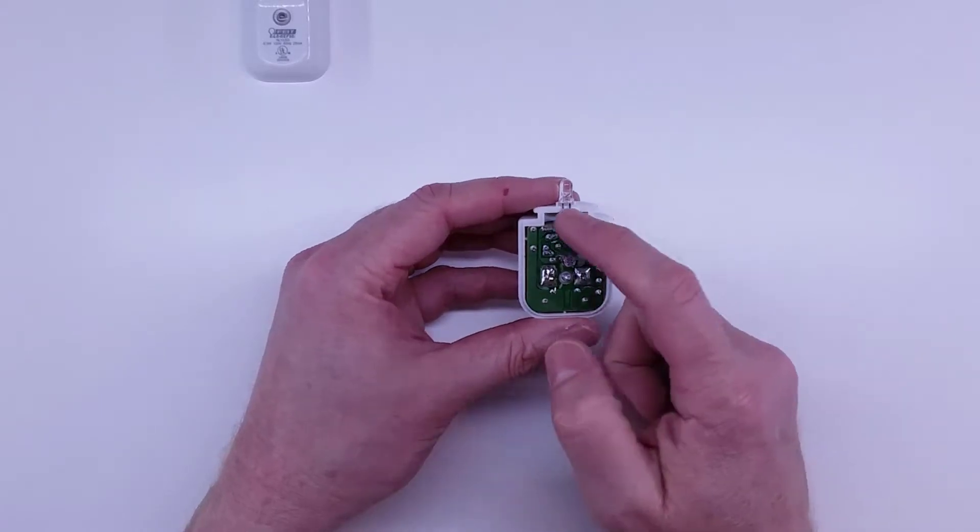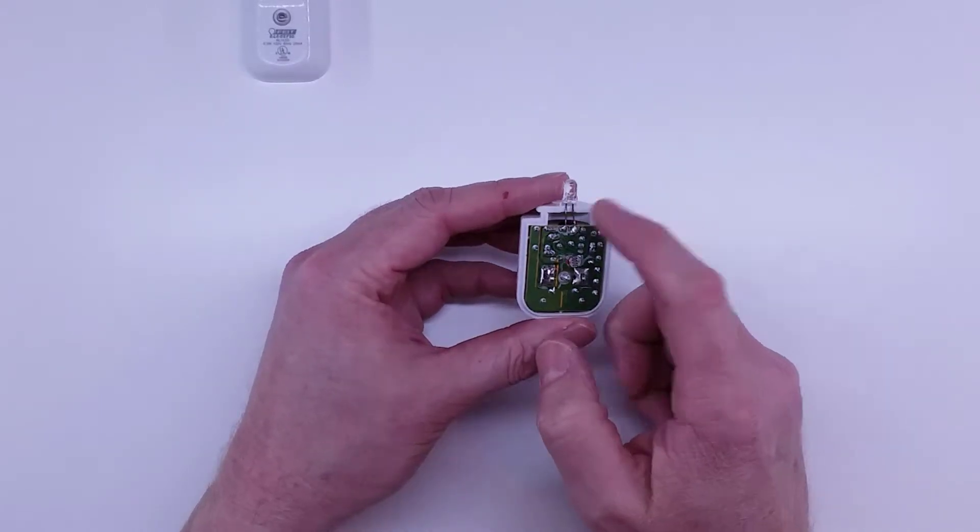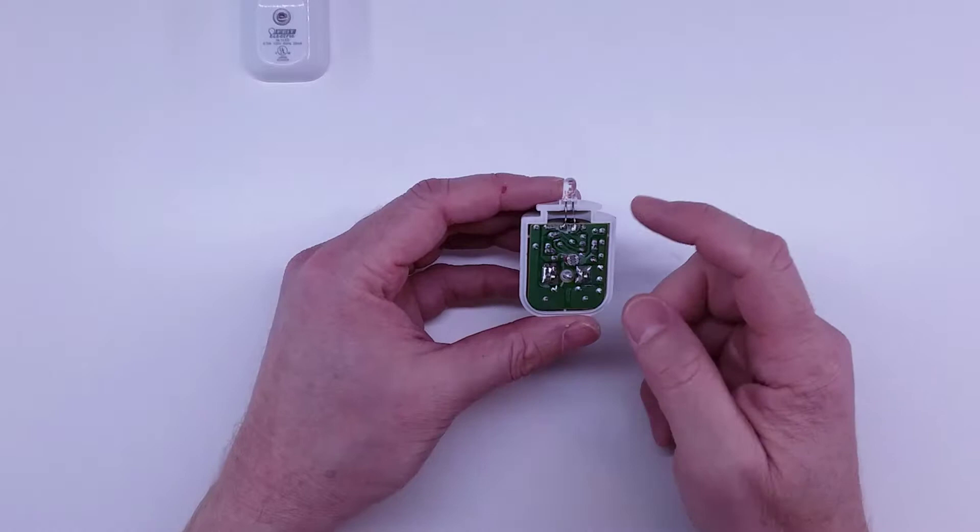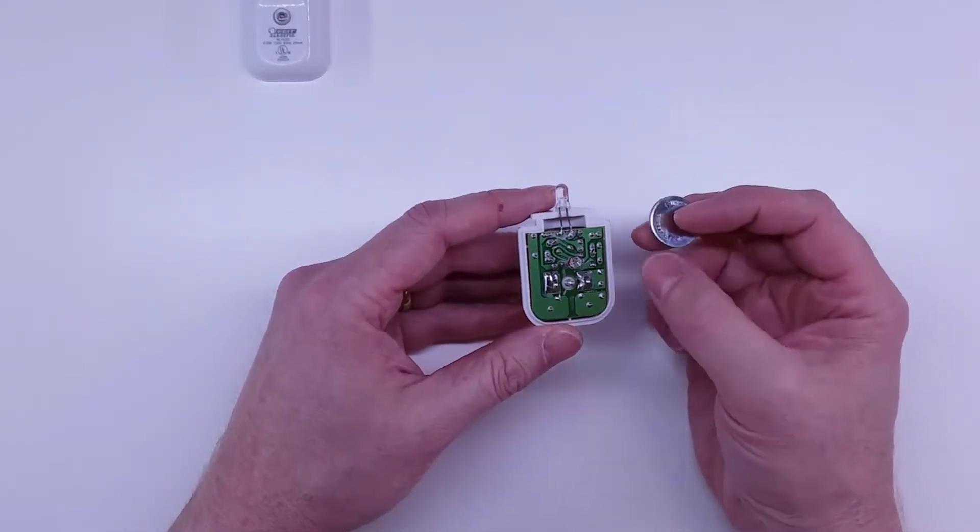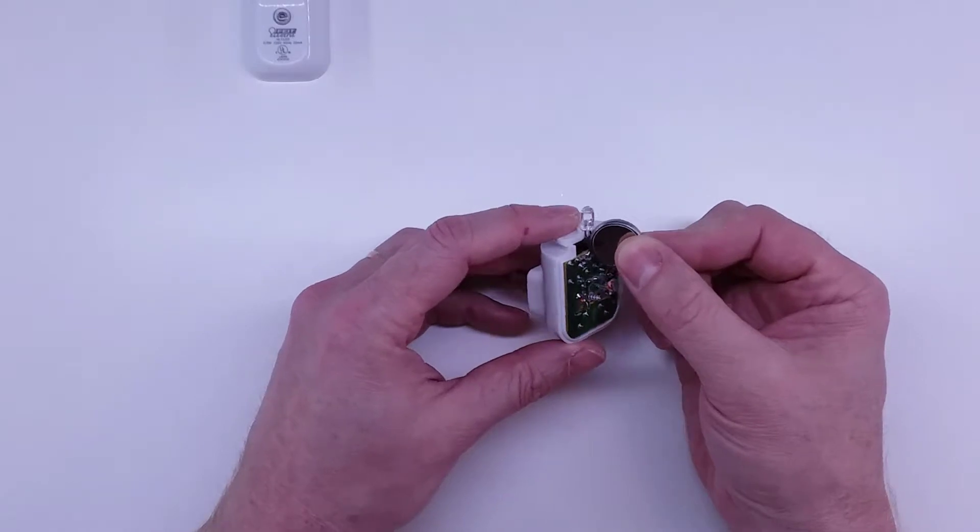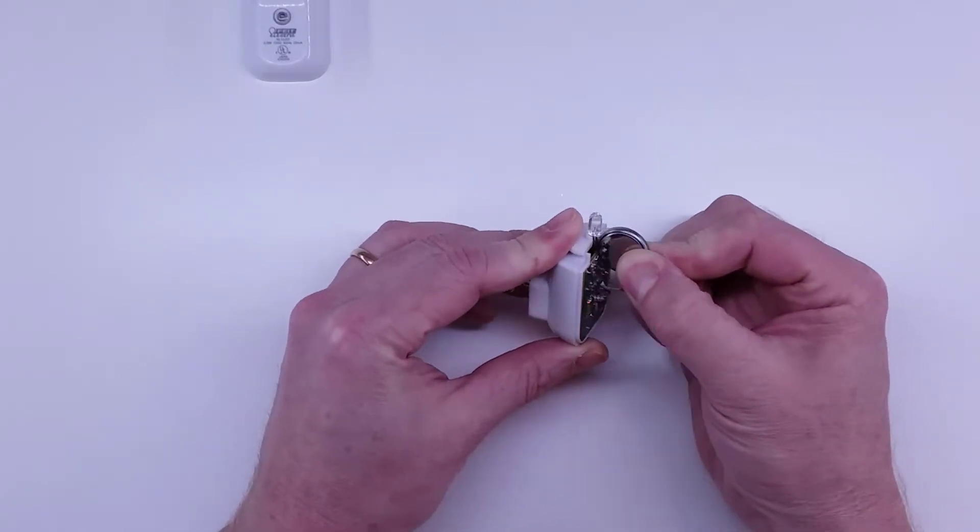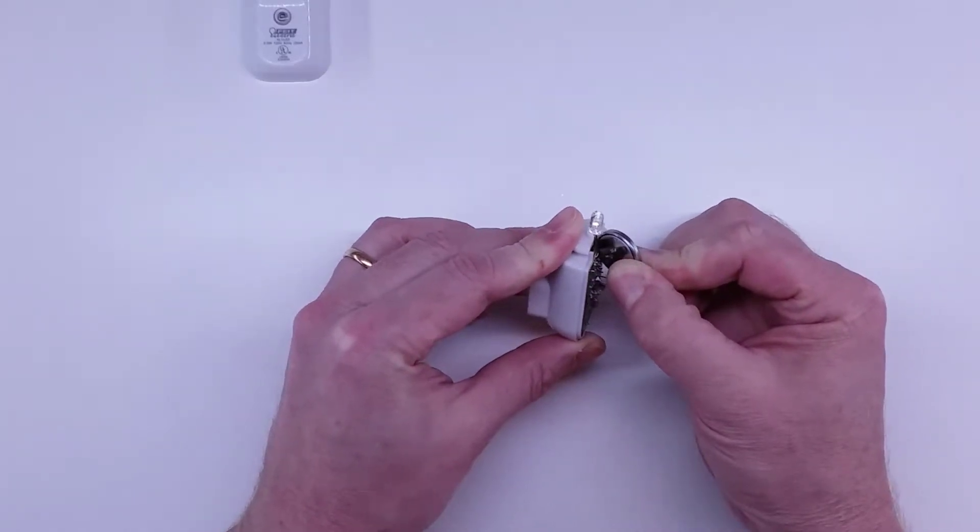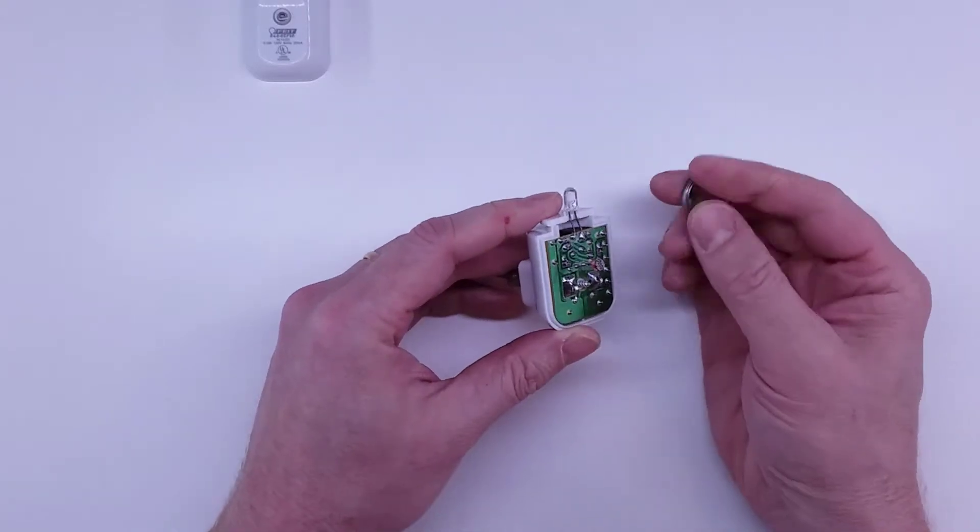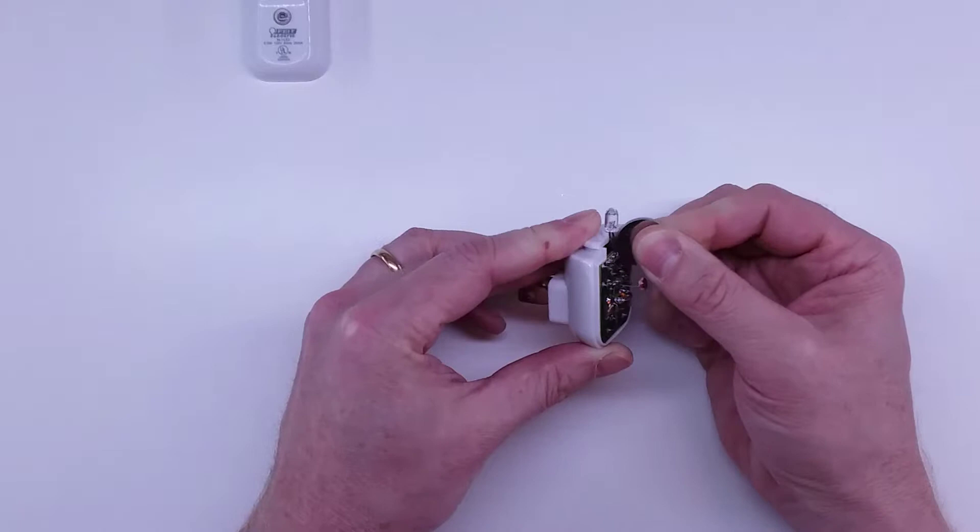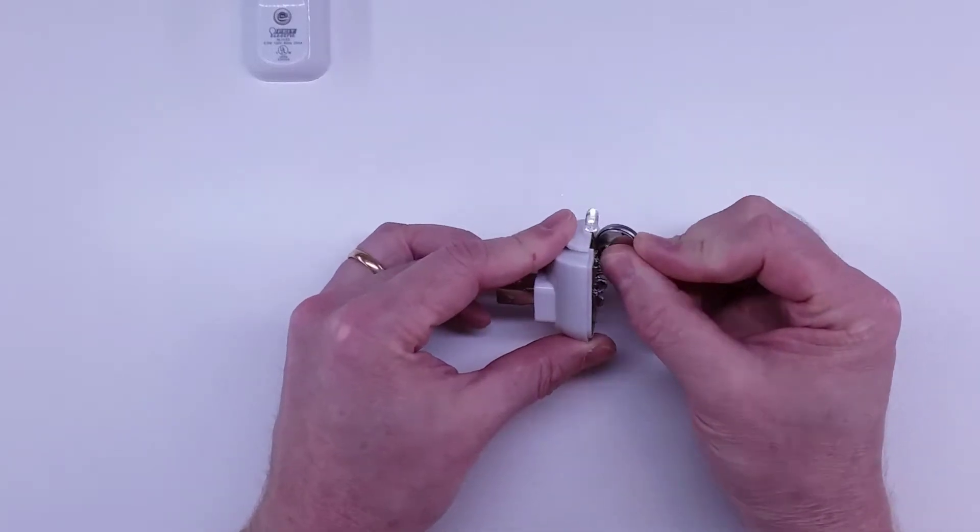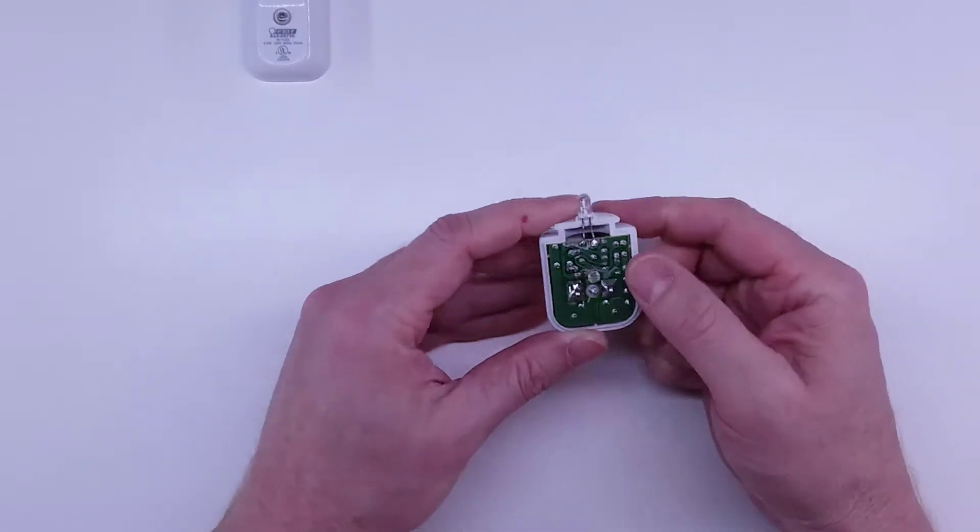The first thing we're gonna do is take a coin cell battery and figure out what the orientation is for this LED so we can mark the positive and the negative. This is the easiest way to tell. I've just got a coin cell battery, and if I wedge it in there between the two posts, you can see this lights up, which means the positive is on the right.